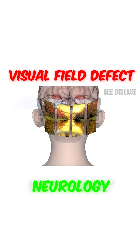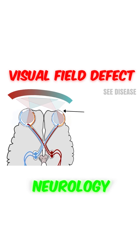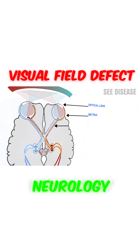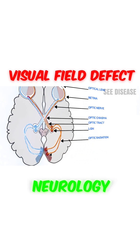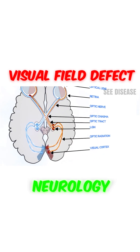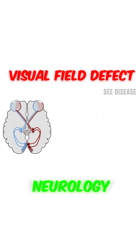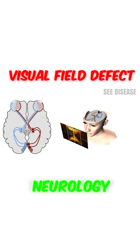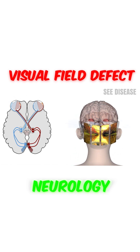Coming to the visual pathway, the visual signals pass through the lens, optic disc, optic nerve, optic chiasm, and optic tract, reaching the lateral geniculate body on both sides. From there, the second-order neuron carries the visual signals through the optic radiation to reach the primary visual cortex, where color image and stereo vision are processed.